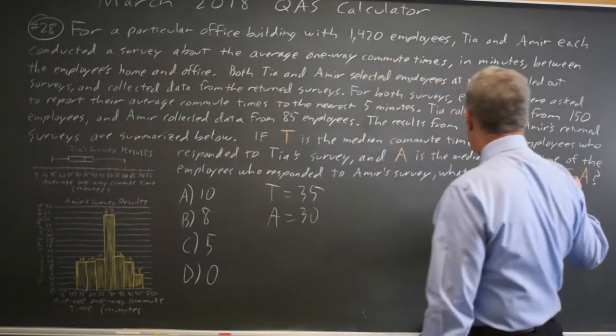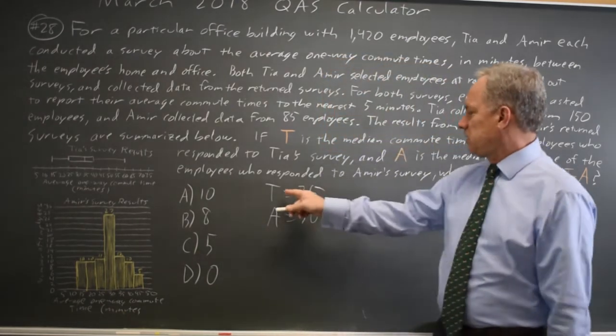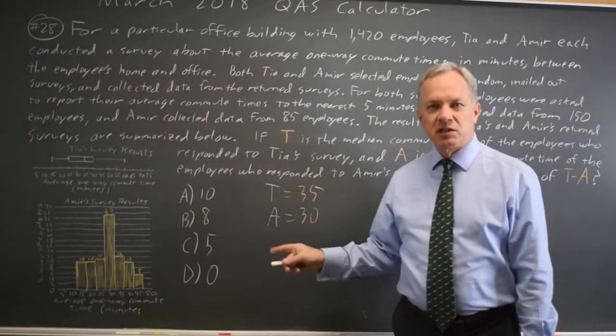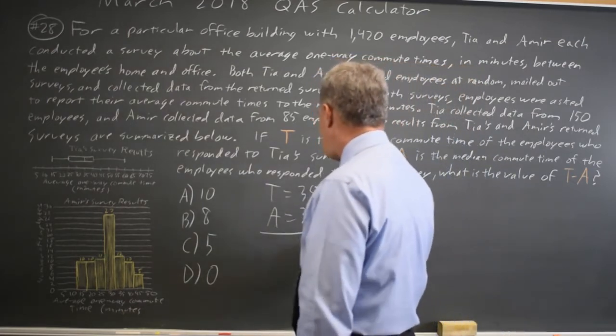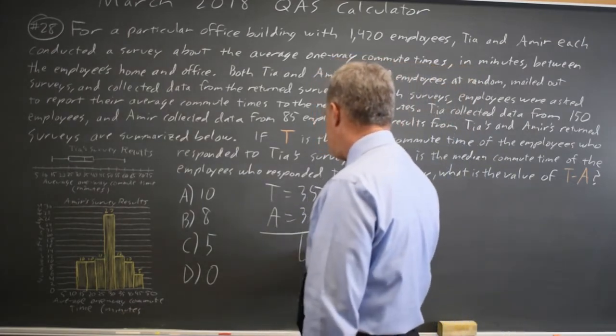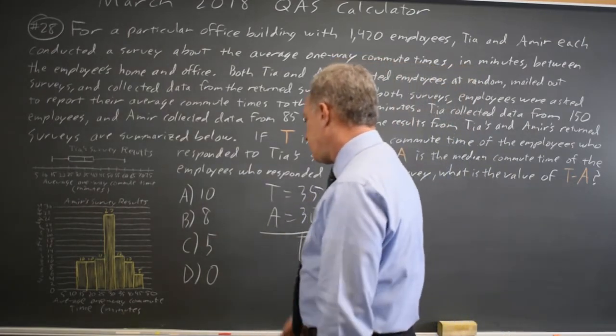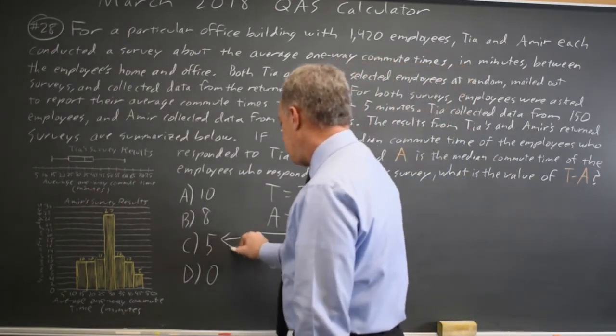And T minus A is 35 minus 30, which equals 5. That's Choice C.